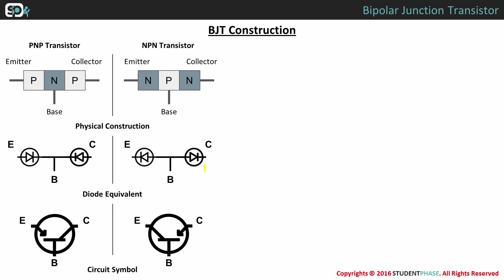Construction of a transistor, along with its diode equivalent circuit and circuit diagram, is as shown. When a transistor is formed by sandwiching a single N region between two P regions, it is called a PNP transistor. And when a transistor is formed by sandwiching a single P region between two N regions, it is called an NPN transistor.